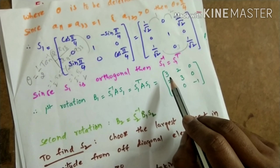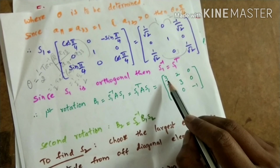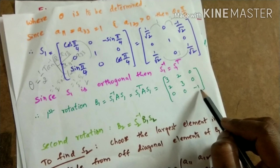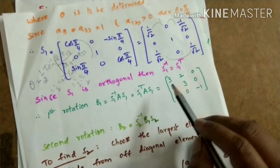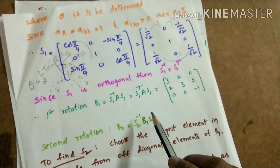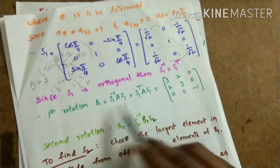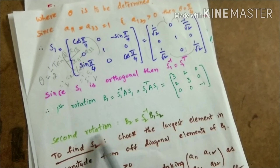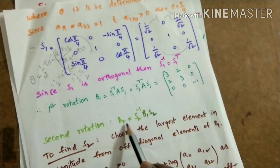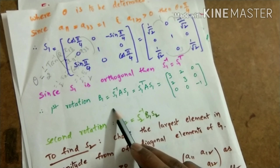The first rotation B1 = S1⁻¹ A S1 = S1ᵀ A S1. We write the transpose of S1, the given matrix A, and then S1, and find the product of these three matrices. The result is B1 = [3, 2, 0; 2, 3, 0; 0, 0, −1]. Since B1 is not a diagonal matrix, the same process must be repeated for B1 to find the second rotation matrix.